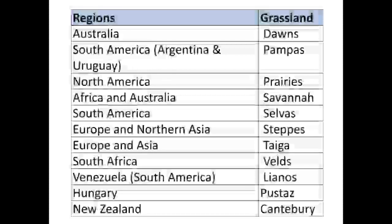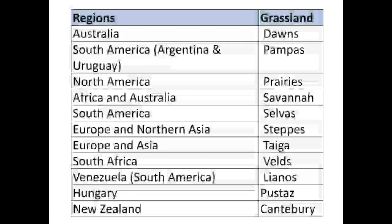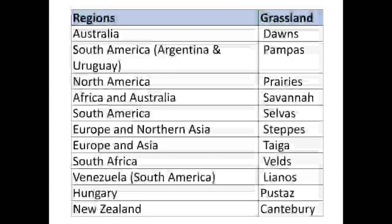The grasslands in North America are called Prairies — this is very important to remember. You must also remember Australia's grasslands called Downs, and not confuse Africa and Australia's grasslands. In Europe and Northern Asia, the grasslands are called Steppes.